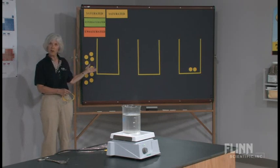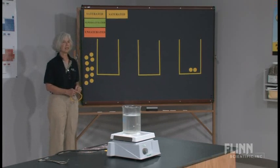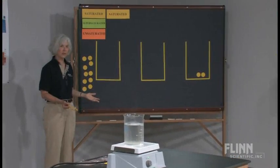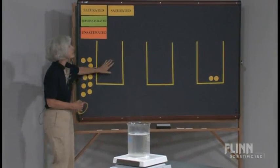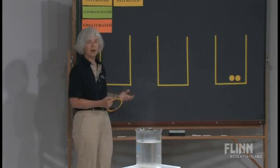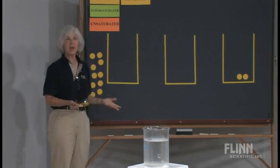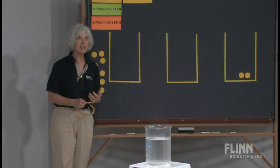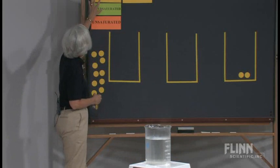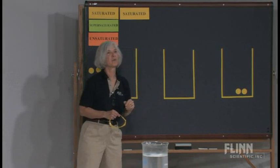What I have up here at the chalkboard are some drawings, and these represent three beakers with solutions. My yellow circles here are going to represent crystals. As we look at these three beakers, we notice in the first beaker there are no crystals visible, in the second beaker there are no crystals visible, but we do see crystals in that third and last beaker. What I would do with my students is ask for a volunteer to come up and label these three beakers — to take our saturated, supersaturated, and unsaturated labels and place them underneath the appropriate beaker.